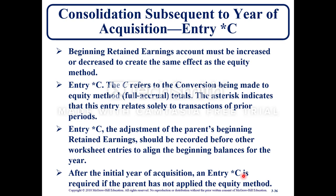Consolidation subsequent to the year of acquisition uses entry C: the beginning retained earnings account must be increased or decreased to create the same effect as the equity method. Entry C refers to the conversion being made to the equity method full accrual totals. The asterisk indicates this entry relates solely to transactions of prior periods. Entry C should be recorded before other worksheet entries to align beginning balances for the year. After the initial year of acquisition, entry C is required if the parent has not applied the equity method.